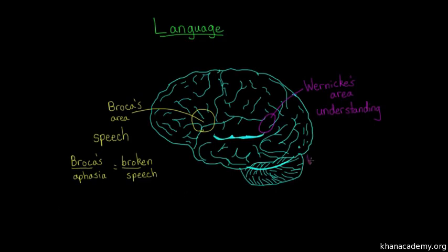When Wernicke's area, back in the temporal lobe, is damaged, you get Wernicke's aphasia, which is quite a different pattern of behavior than you get with Broca's aphasia.